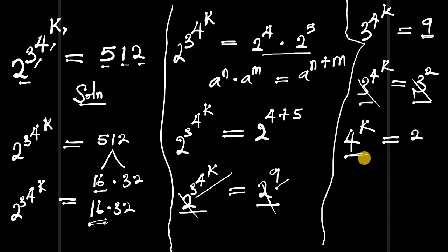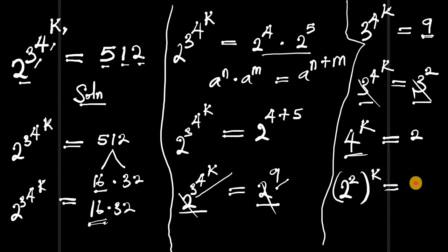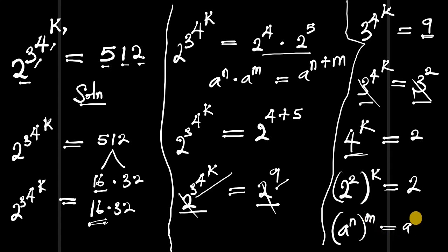Now, 4 is a perfect square equivalent to 2^2. So we can write (2^2)^k equals 2. Let's also consider this identity: if you have (a^n)^m, it equals a^(n times m). That means we are going to multiply 2 by k.